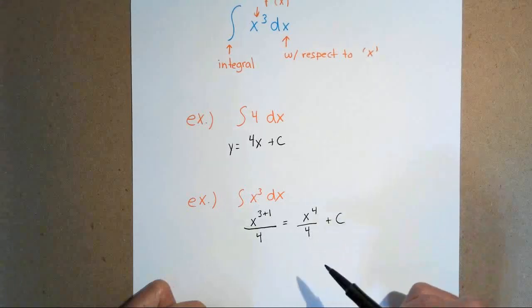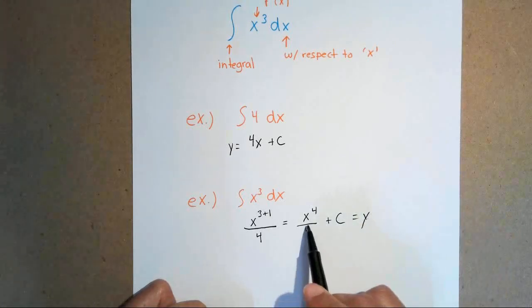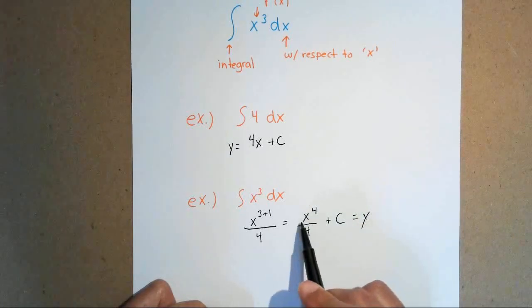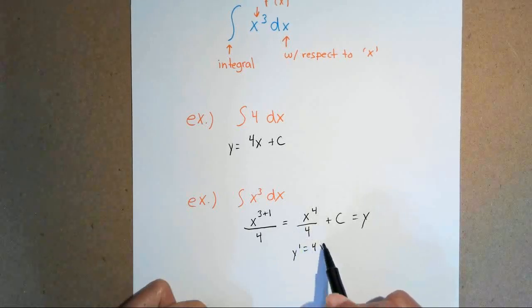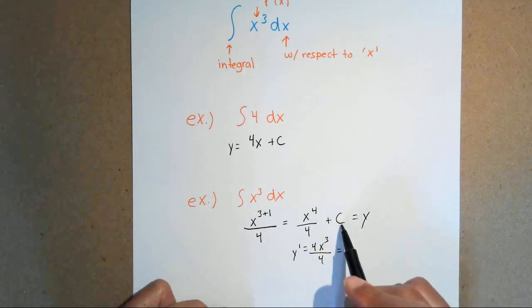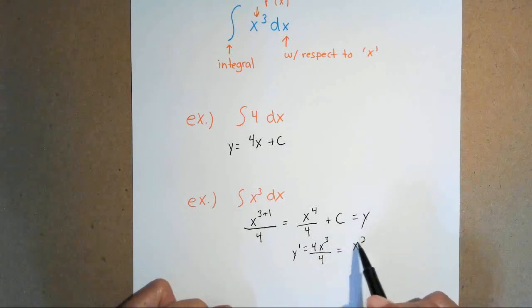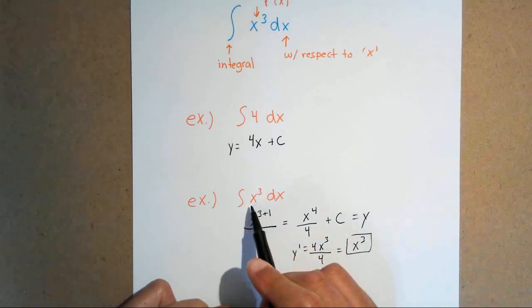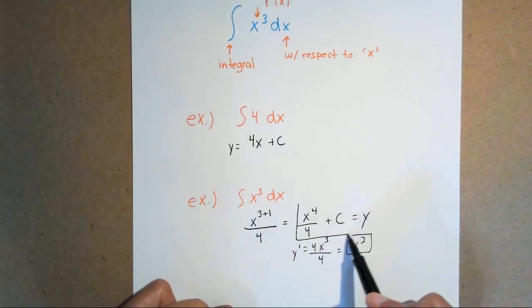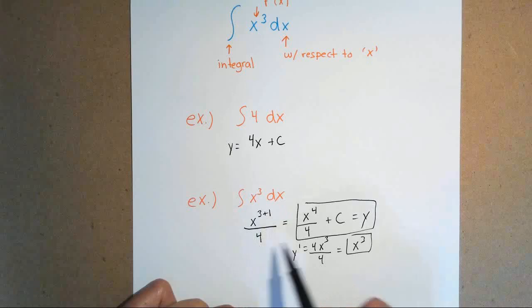The good thing about finding antiderivatives is you can find the derivative to check your answer. If we find the derivative of x to the 4th over 4, bring the 4 down: 4x cubed over 4. The 4s cancel, leaving x cubed — your original equation. The derivative of C is just 0. So anytime you find the antiderivative of a variable, add 1 to the exponent and divide by that new exponent.